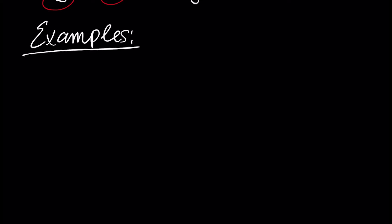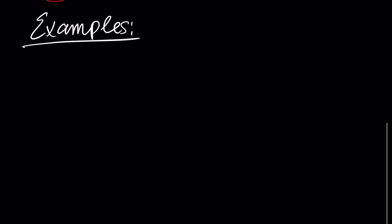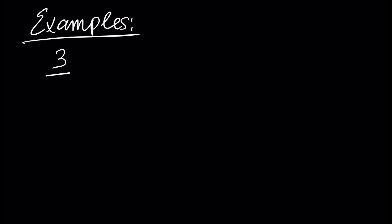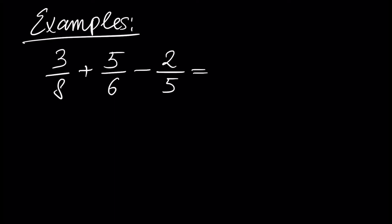Assume we have 3 over 8 plus 5 over 6 minus 2 over 5. We have to reduce all three fractions to a common denominator. To do this we need to find the least common multiple of 8, 6, and 5.